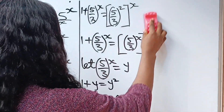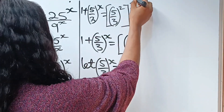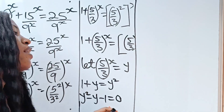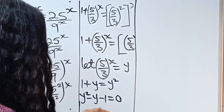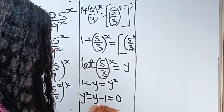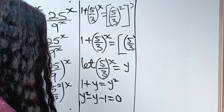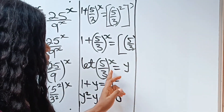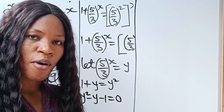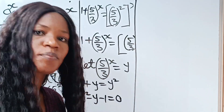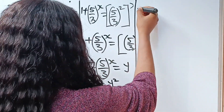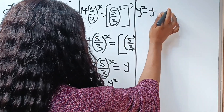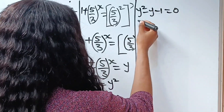Hope you have subscribed. Have you? Now, we are going to use the quadratic equation formula to solve for the value of y, then substitute it back to get the value of x. So we have y squared minus y minus 1 is equal to 0.